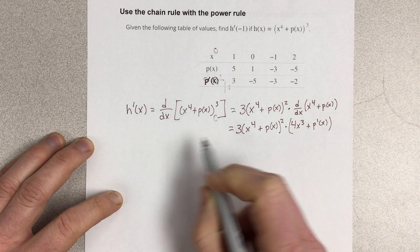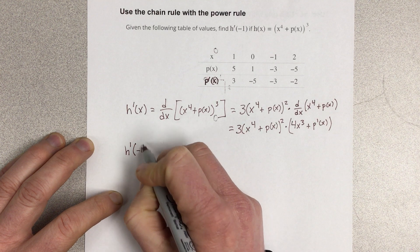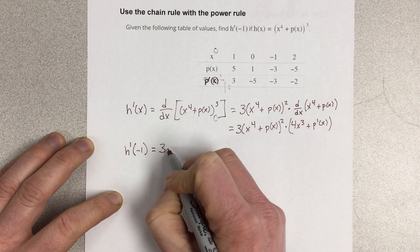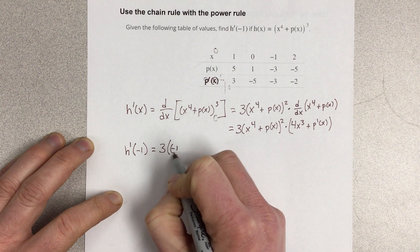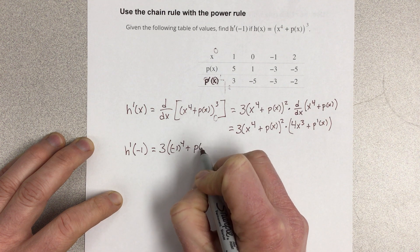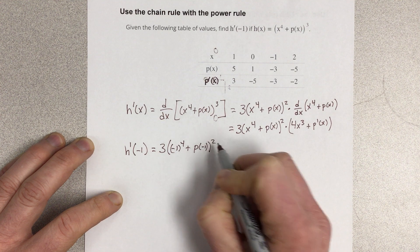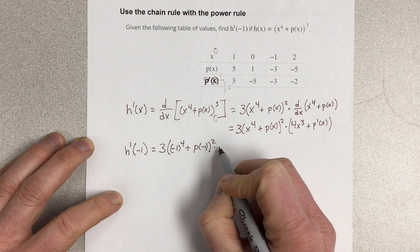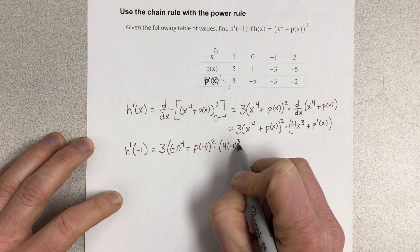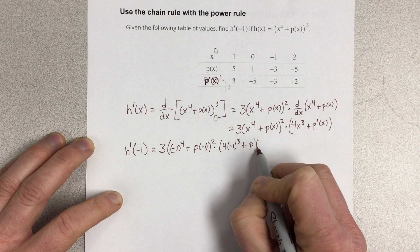Now they want us to evaluate h prime at negative 1. So we're going to plug all that in. That would be 3 times negative 1 to the 4th power plus p of negative 1, squared, times 4 times negative 1 cubed plus p prime of negative 1.